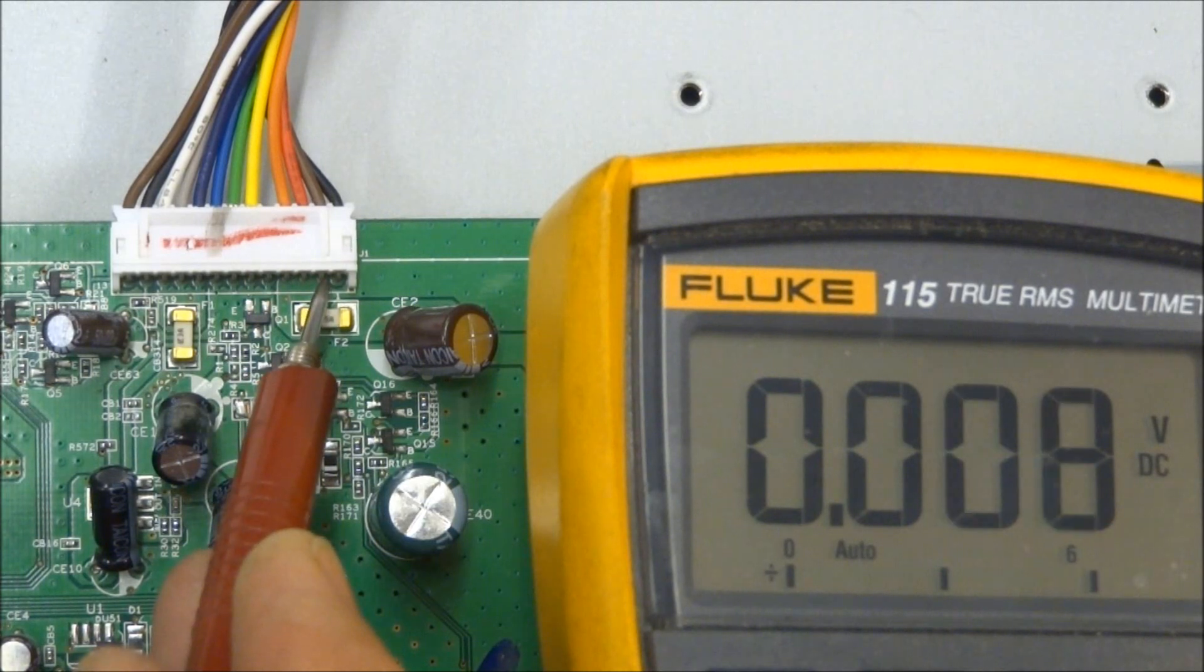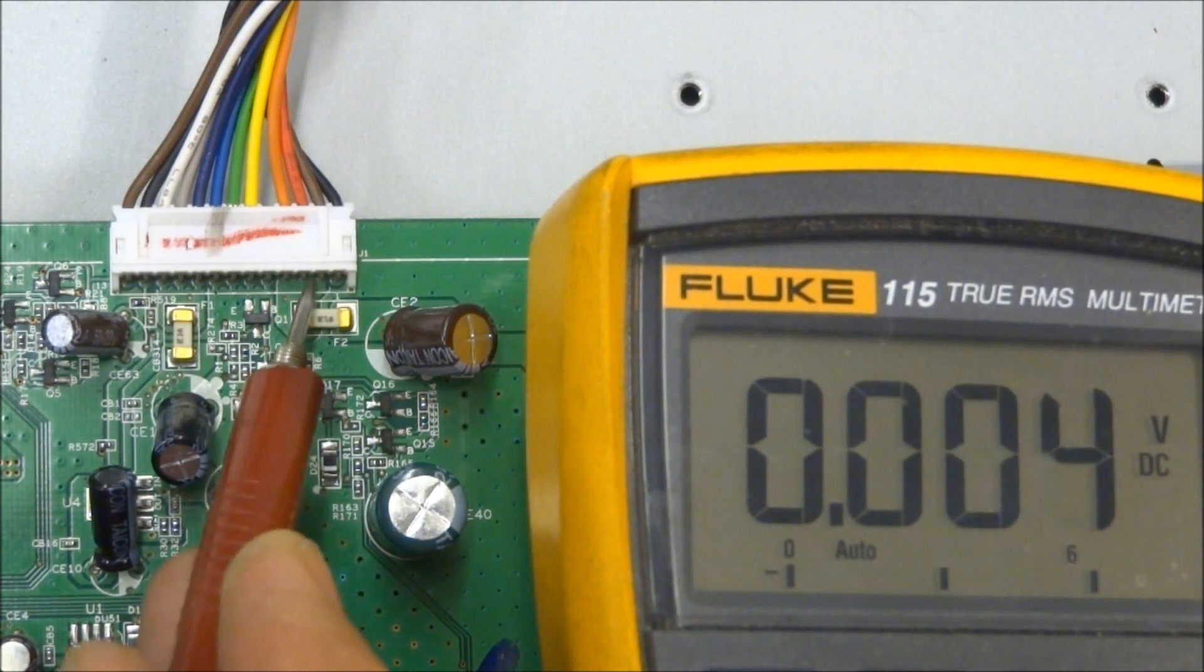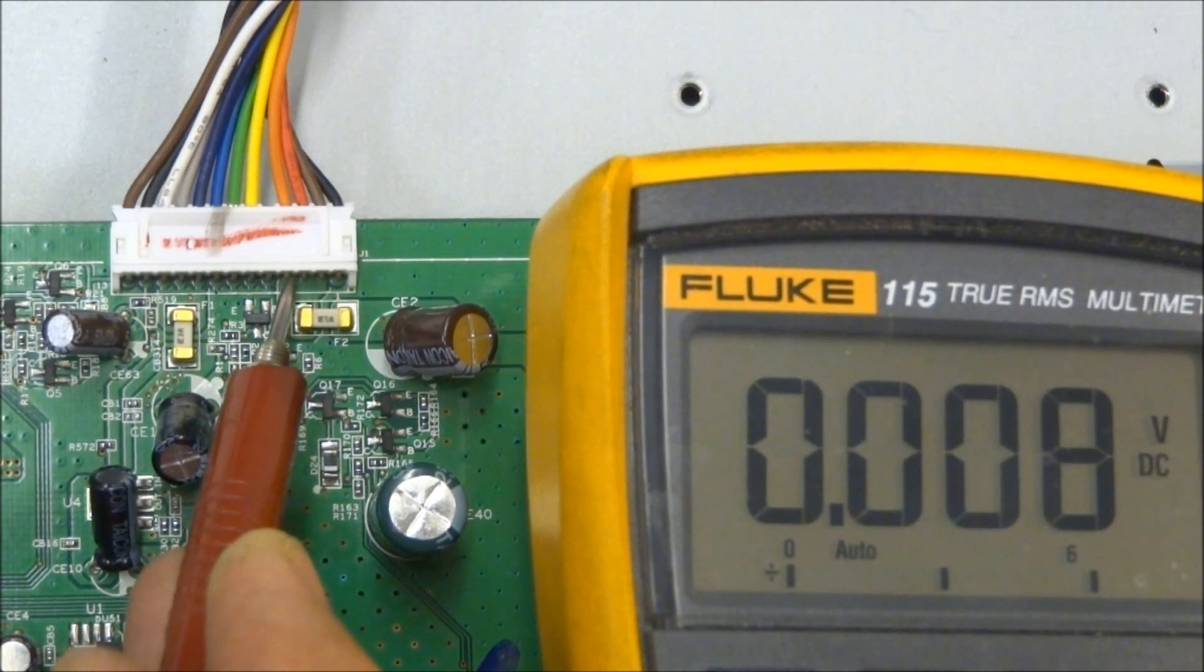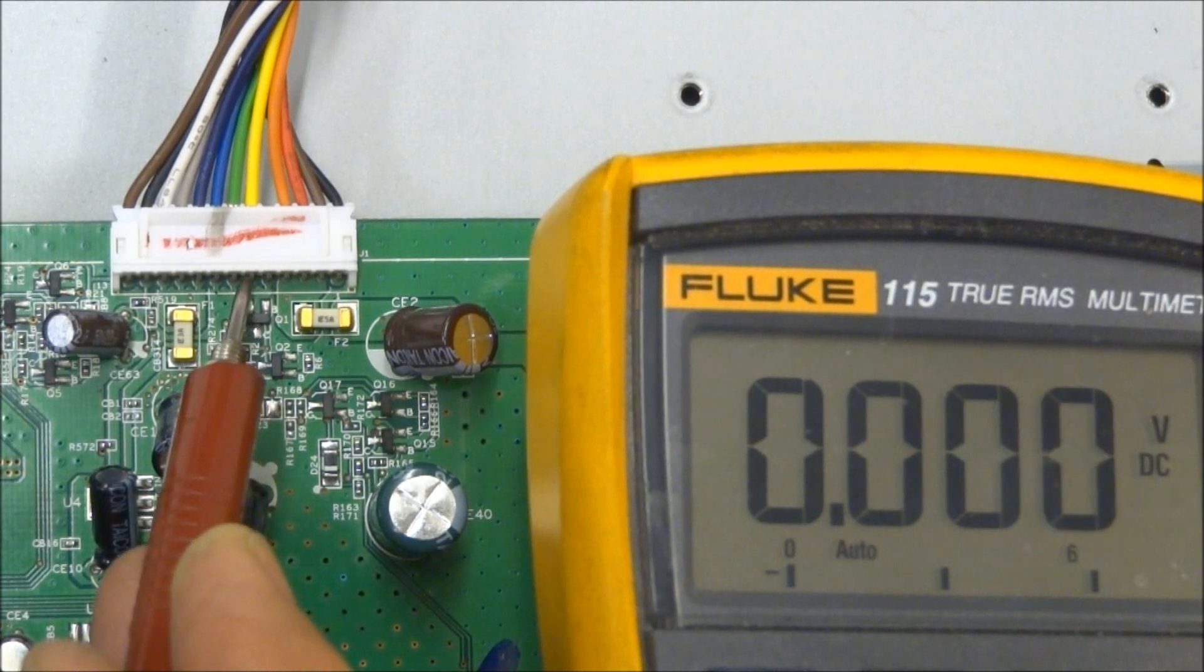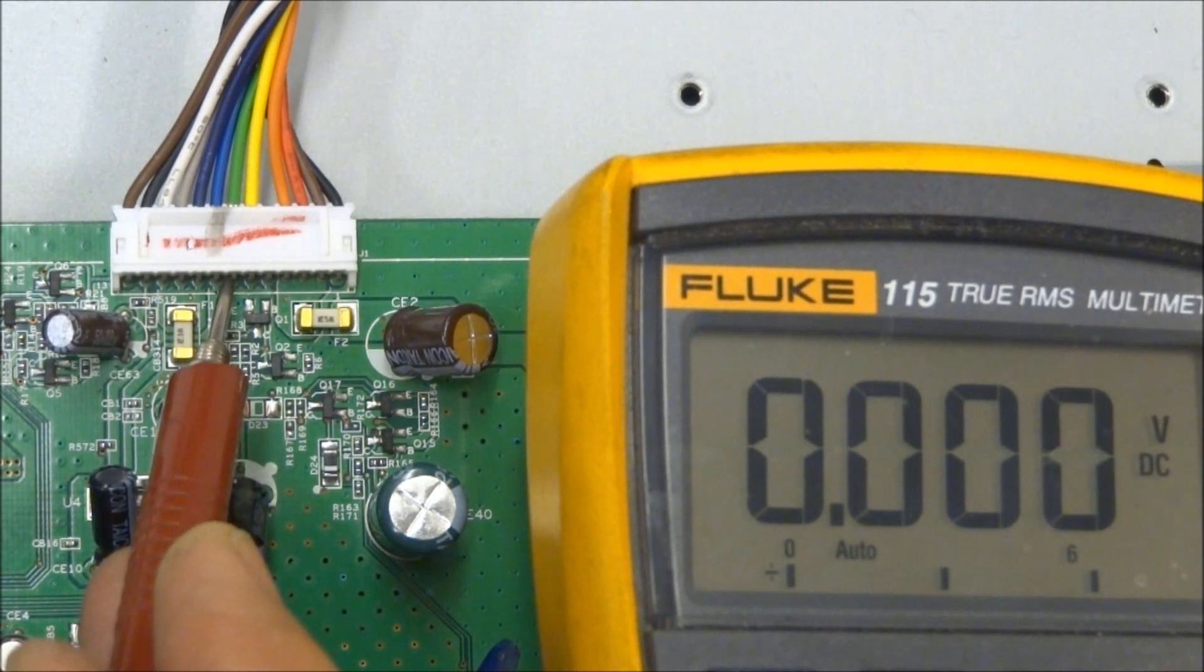Pin 2, 3, and 4 are all 12 volts. Pin 5, there's no wire there, but it's a ground. Pins 5, 6, 7, and 8 are all grounds.